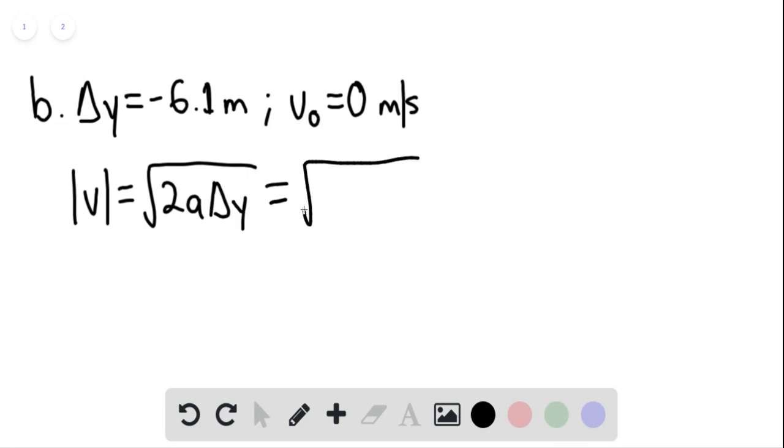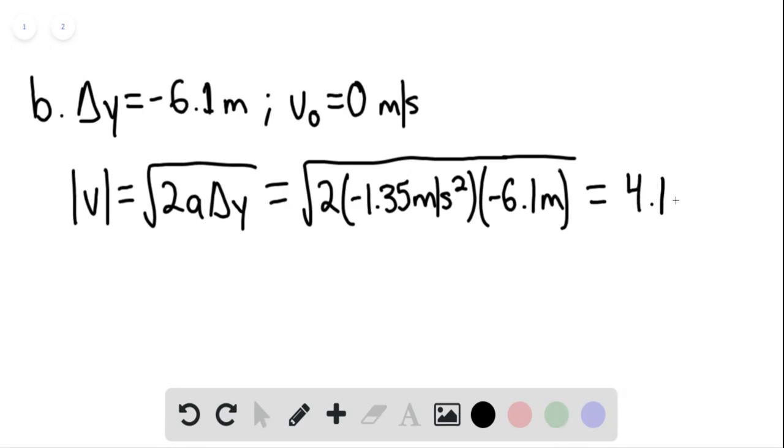This equals the square root of 2 multiplied by negative 1.35 meters per second squared multiplied by negative 6.1 meters. We find that the magnitude of the final velocity is 4.1 meters per second. This is our final answer.